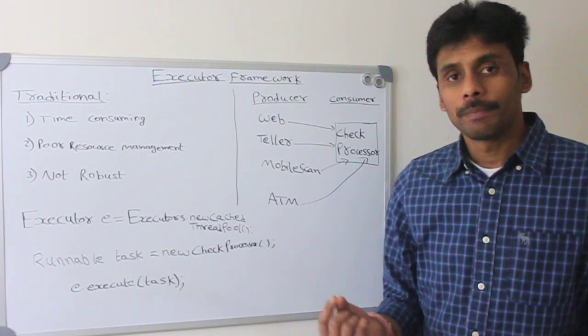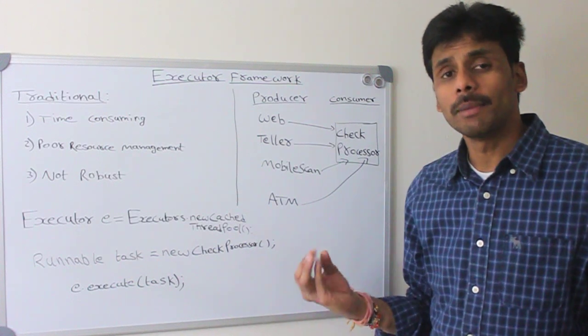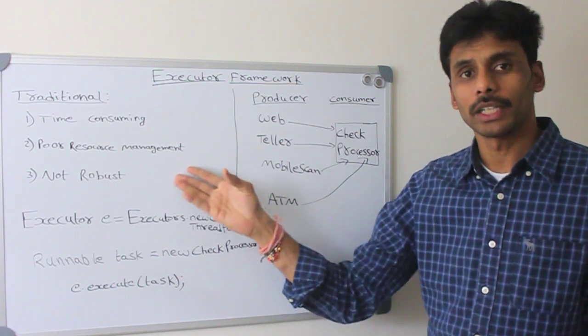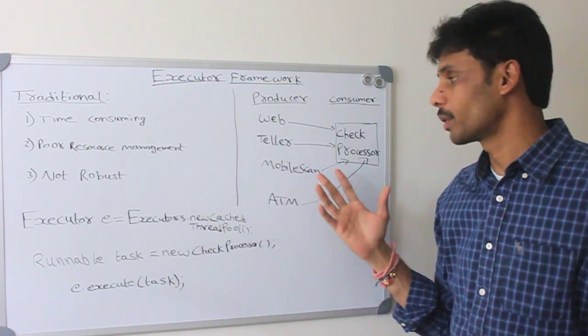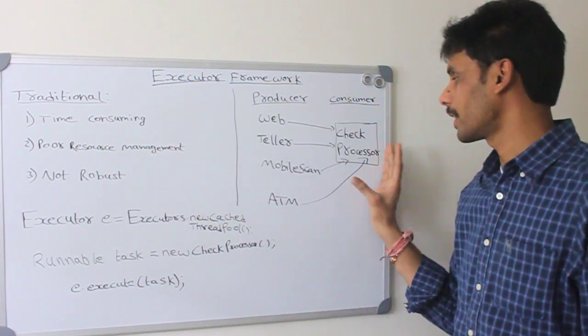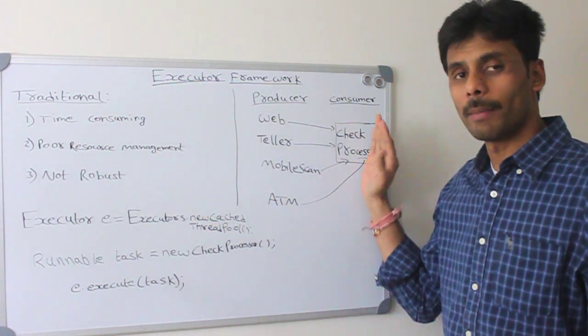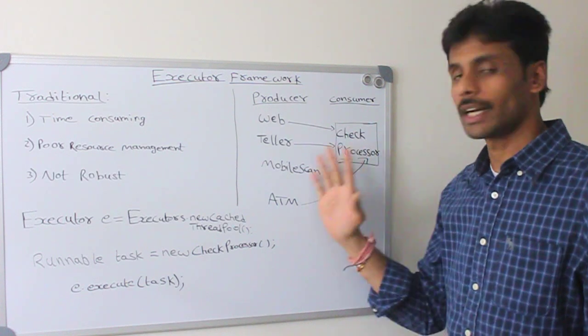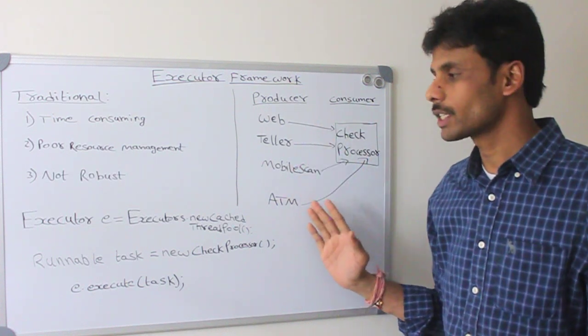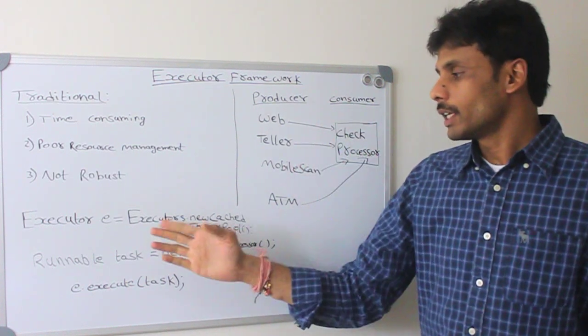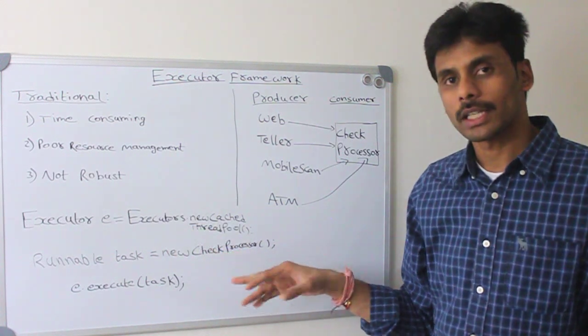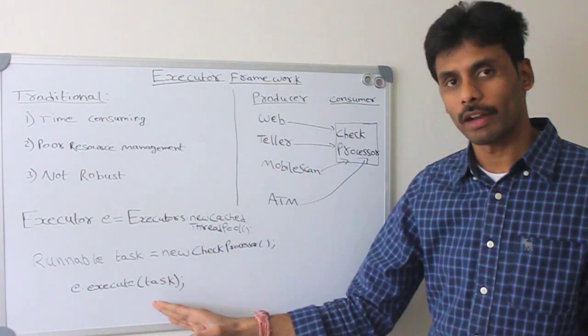To quickly summarize, from this video you have learnt the limitations of creating a thread using the traditional approach. And the example we took was a check processing application, a multi-threaded check processing application that can take checks from various channels. And we have seen how easy it is to create a check processor task and then hand it over to the executor framework.